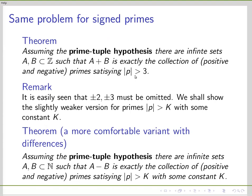I don't want to tell about the extra trouble we have to take to include the small primes. Also, instead of a sum set, I will use a different set — of course we can change b into minus b, which will make for a somewhat more comfortable notation. The result I will prove: assuming the prime tuple hypothesis, there are infinite sets of positive integers such that all differences are primes, and only a finite number of primes is missing.